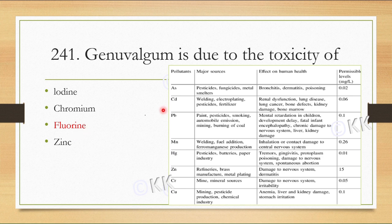I have mentioned other heavy metal poisoning related effects. Arsenic causes bronchitis and dermatitis. Cadmium causes renal dysfunction and lung disease. Lead causes mental retardation in children and fetal encephalopathy. Manganese toxicity occurs by inhalation. Mercury causes Minamata disease.